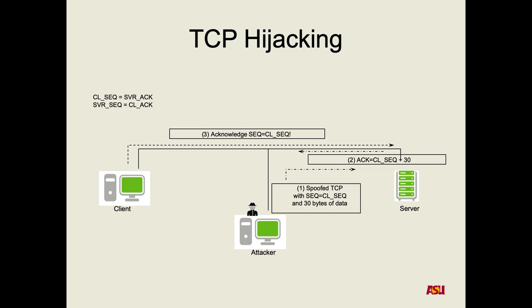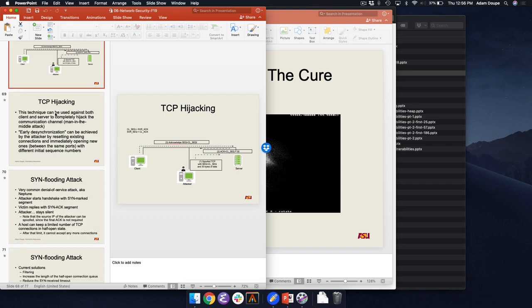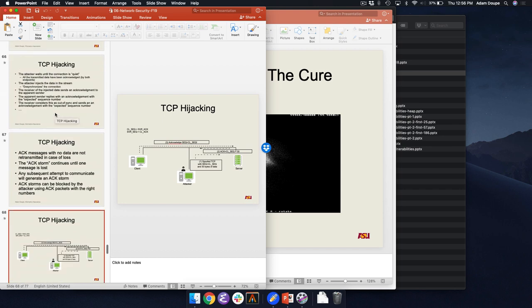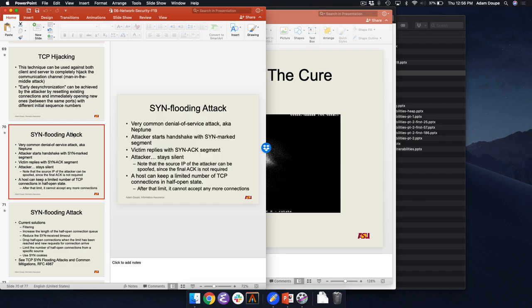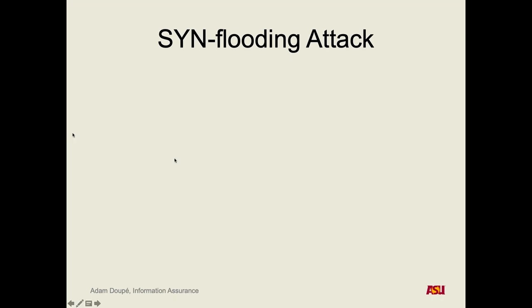The ACK storm that happens when they desynchronize was discussed. Now moving on: there are various cases where we might try to attack the availability of a system. Why would somebody want to take down another machine? Let's put ourselves in the mind of an attacker.